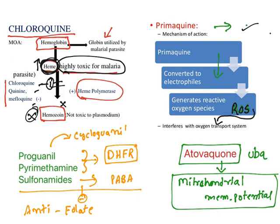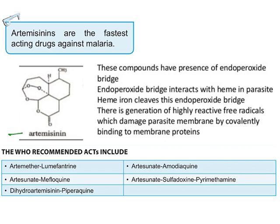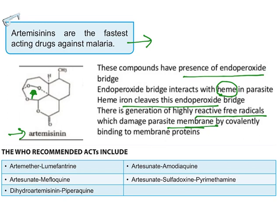Artemisinin is the fastest-acting drug against malaria and is the mainstay of malaria treatment. These compounds have an endoperoxide bridge inside the ring structure. This endoperoxide bridge interacts with heme in the parasite, and iron cleaves the endoperoxide bridge, releasing reactive free radicals. These free radicals damage the parasite membrane, resulting in parasite death.